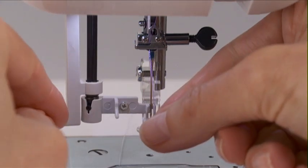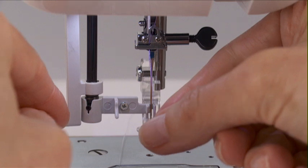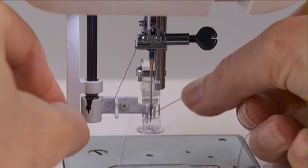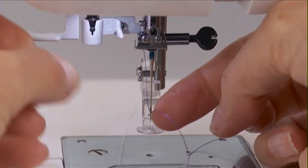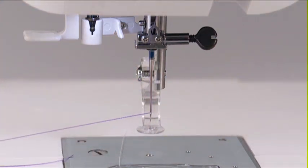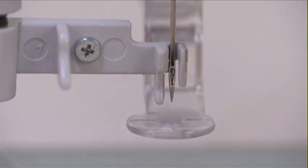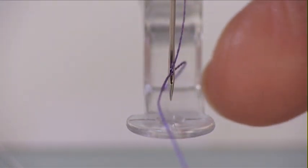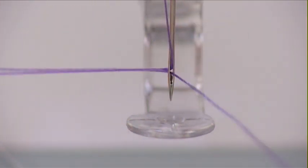A hook will come through the needle eye from behind. Bring the thread down, around the threader guide, and under the hook. Release the threader slowly while lightly holding the end of the thread with your hand. A loop of thread will be pulled through the eye of the needle. Pull the tail of the thread through the eye of the needle.